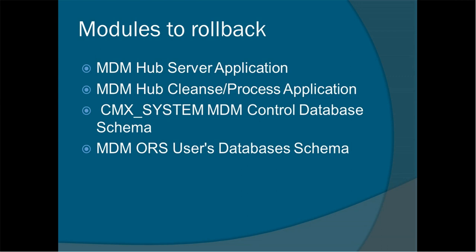What are the things we need to take care of as part of the rollback? First is the hub server application. The next component is the cleanse server component, also called the cleanse process or cleanse application. After that, we have to take care of CMX system and CMX ORS related components. These are the four basic components to handle during rollback.